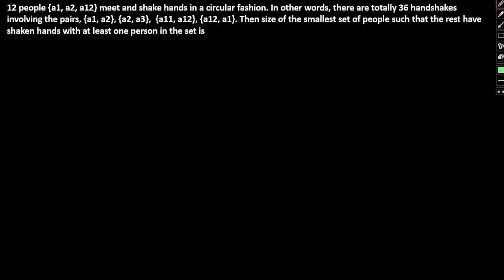This question is a fairly interesting one. 12 people A1, A2 through A12 meet and shake hands in a circular fashion. In other words, there are total 36 handshakes involving pairs A1, A2, then A2, A3, through A11, A12 and A12, A1. Then size of the smallest set of people such that the rest have shaken hands with at least one person in the set is.